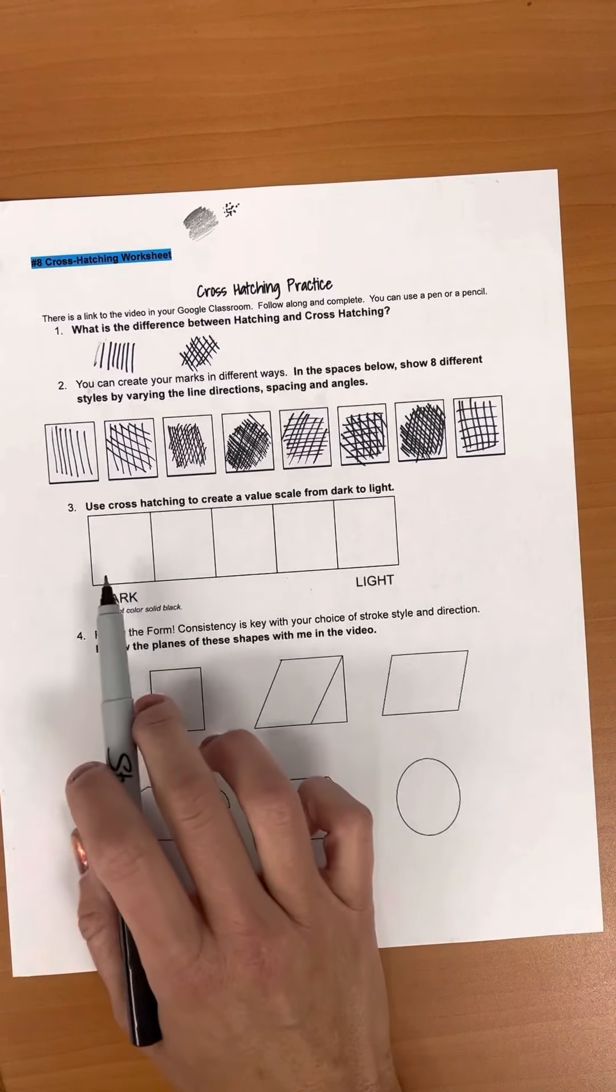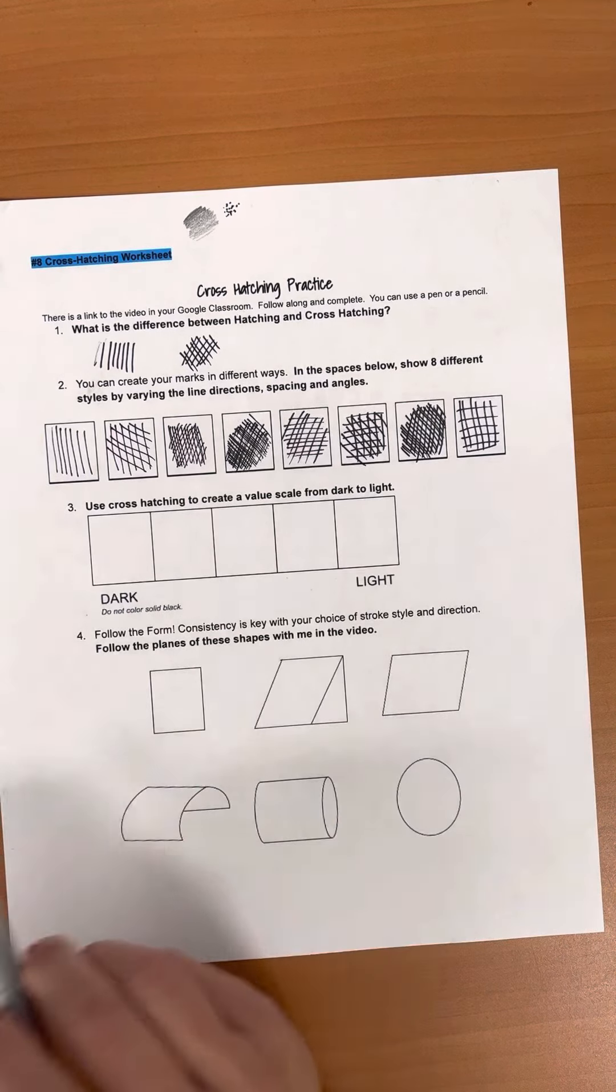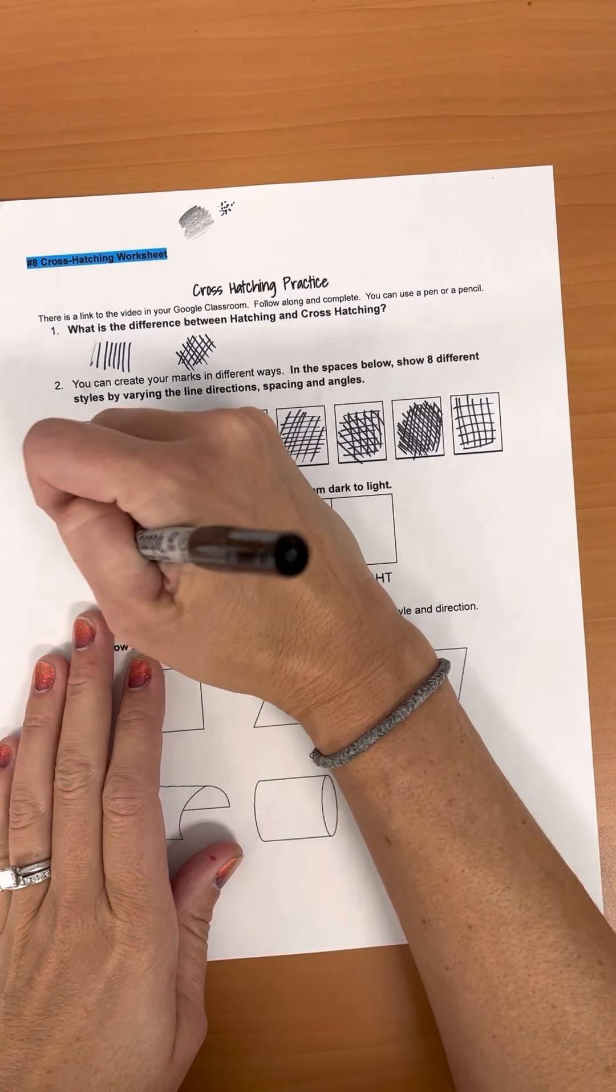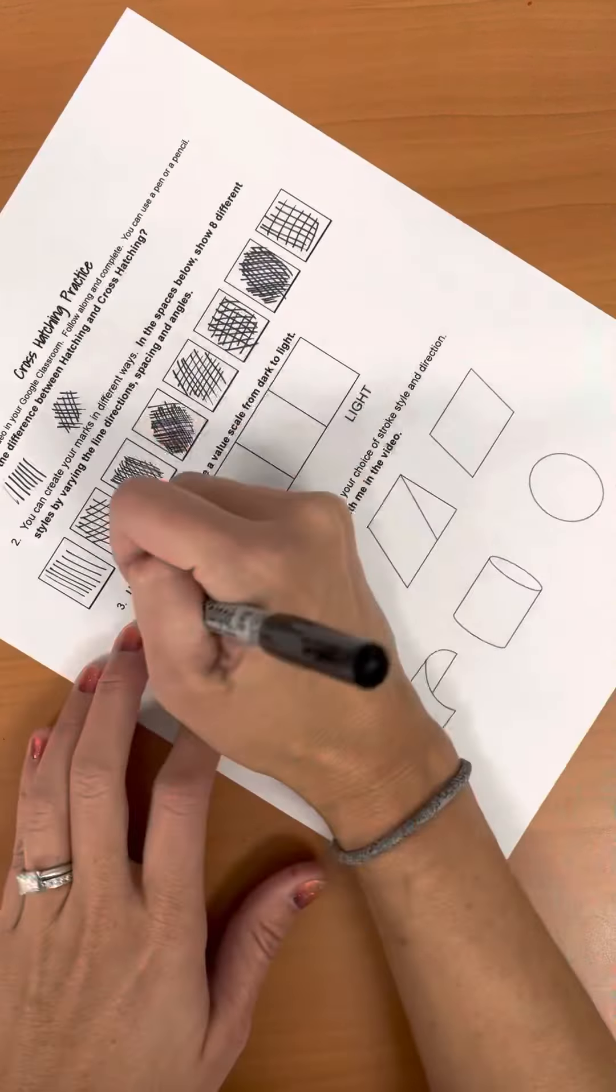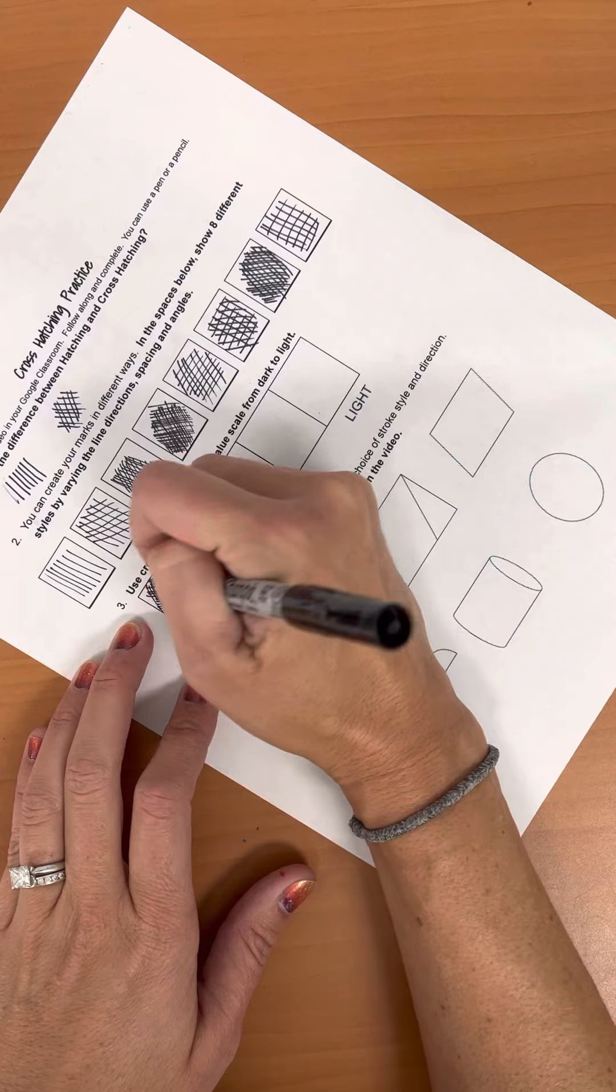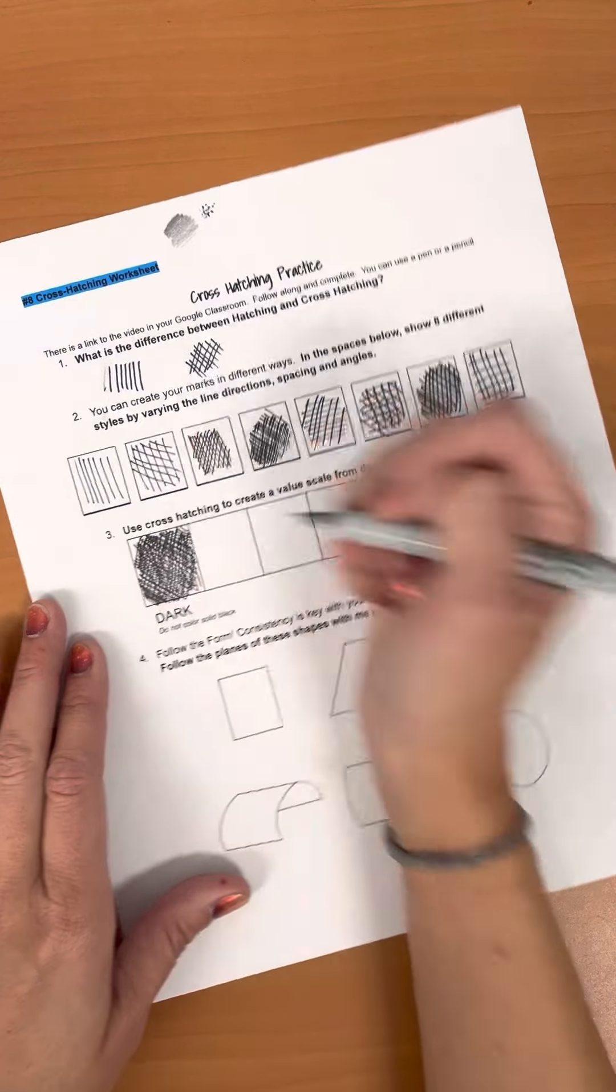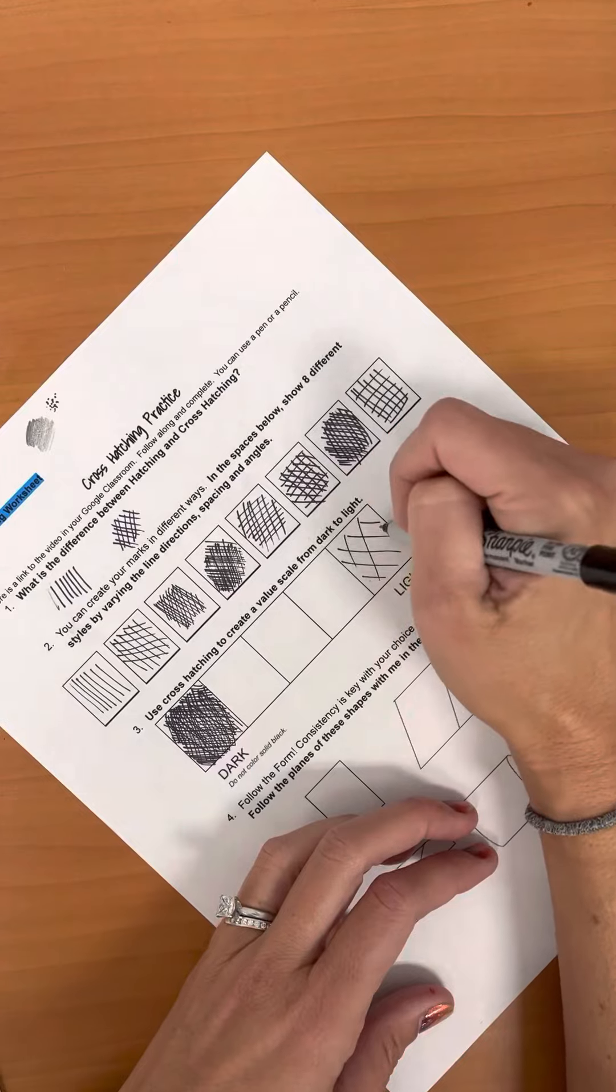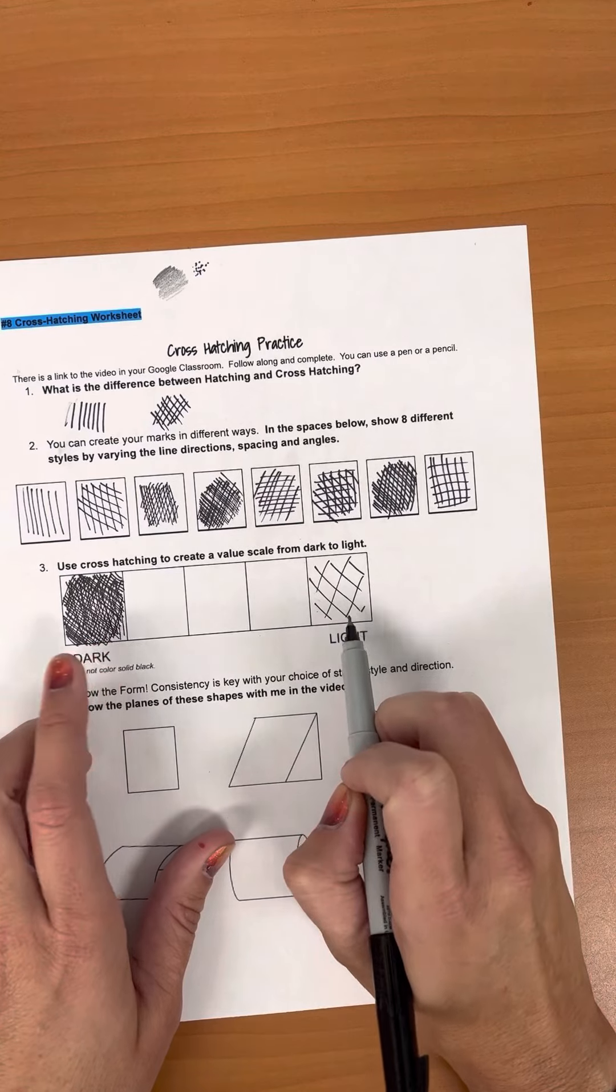Now down here you're going to create a value scale. So you're going to make this dark to light. We're not going to color anything in solid, everything is created with a line. So our darkest spaces are going to be created by covering the white of your paper. The more lines I create, the less spaces that show through, the darker my marks appear. Now over here where they're light, I have a lot more paper showing through, so I have a much different value.